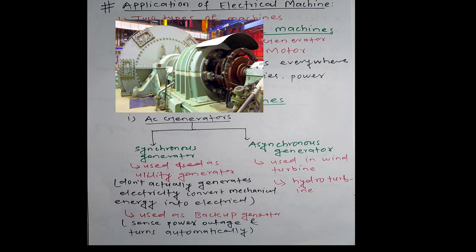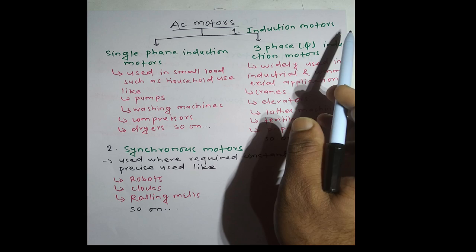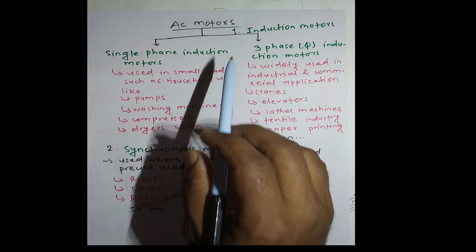Now, uses of AC motors. AC motors are also two types: induction motors and synchronous motors. In induction motors, we can see there are two types: single-phase induction motors and three-phase induction motors.